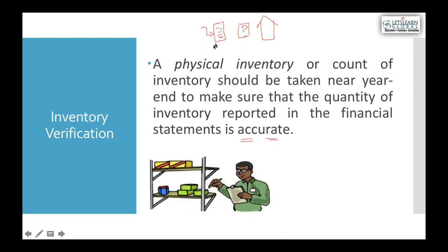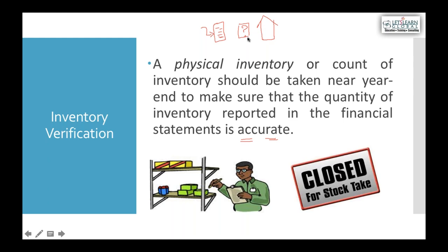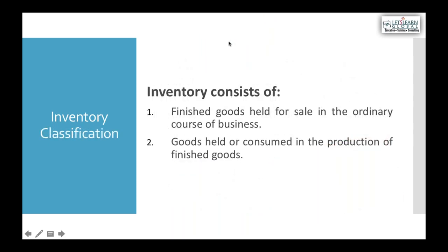In stock-taking, we generate a report from the accounts or inventory department showing what stock should exist at a particular date, then physically verify the goods in the warehouse. Inventory in a retail industry consists of finished goods only. In a manufacturing industry there are three types: raw materials, work-in-progress (semi-finished goods), and finished goods.